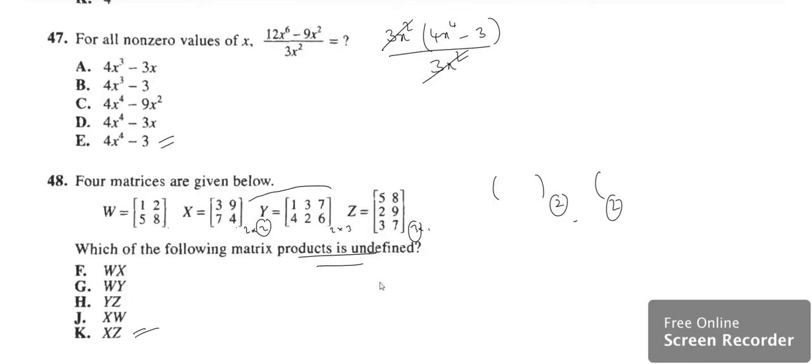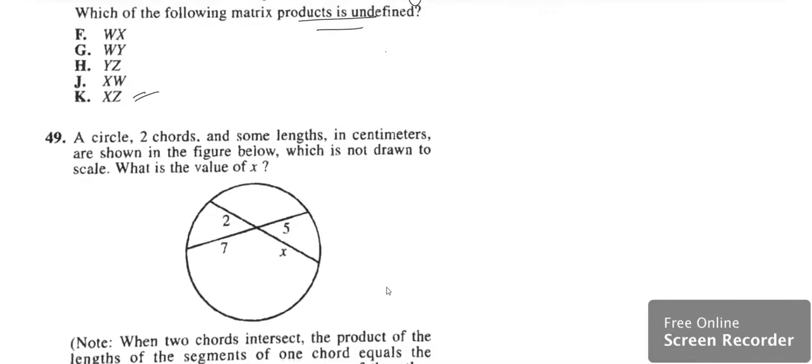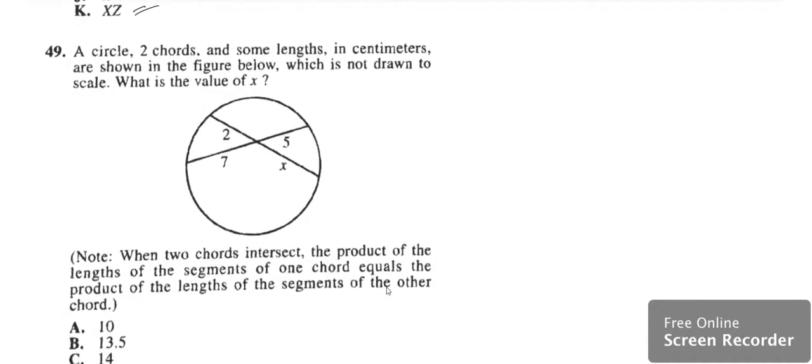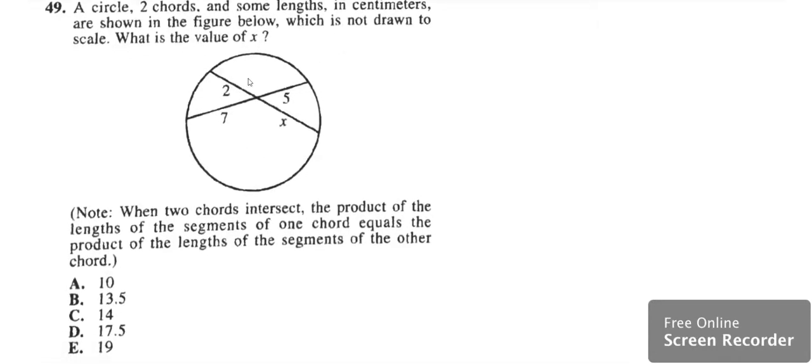When I move on to next case, we've got a question based upon circle geometry. A circle, two chords and some lengths in centimeters are shown in the figure, which is not drawn to scale. What is the value of x? Given the two chords intersect, whenever two chords intersect, the note is given that the product of the lengths is equal to the length of the segments of the other.